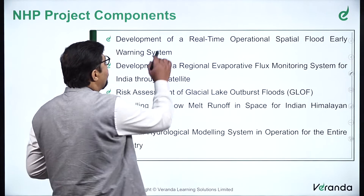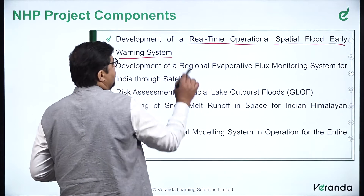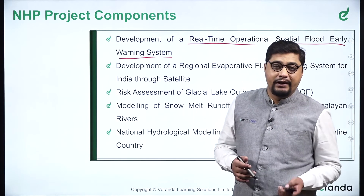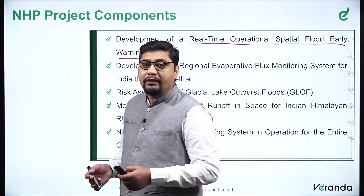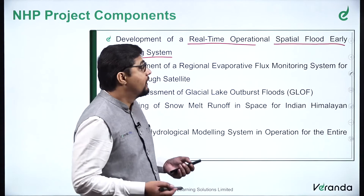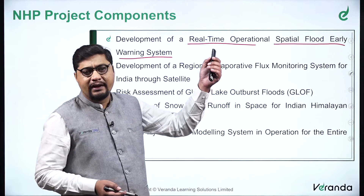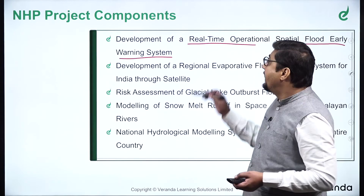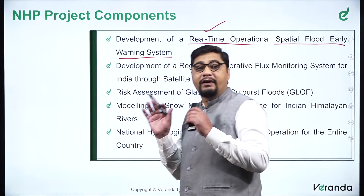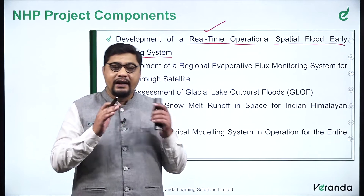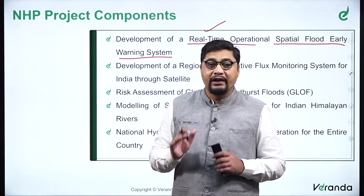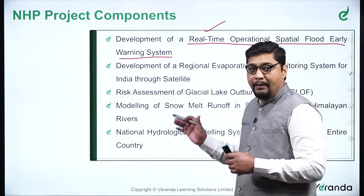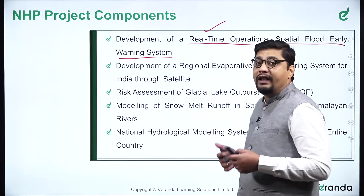The first NHP project component is the development of a real-time operational spatial flood early warning system. Nowadays we witness flash floods directly, driven by climate change. Monitoring and having mitigation and disaster management techniques for that is important, and that can be done only when you have a real-time operational spatial flood early warning system — analyzing data from satellites and giving warnings, for example, that in the next 30-40 minutes there may be flash floods in a particular area — so you can reduce the disaster and save lives.